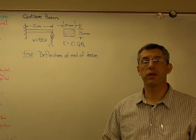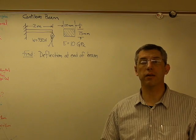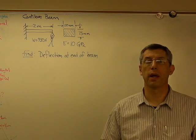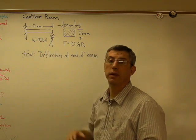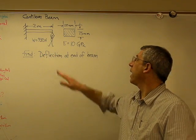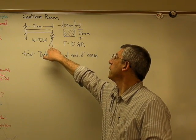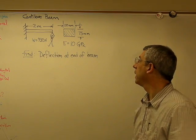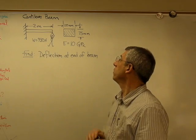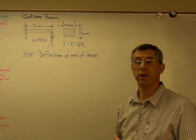I've had several requests to do an example on cantilevered beams, so here you go. I've set up a problem where we've got a cantilevered beam two meters long, and we have a weight hanging from the end of it, say a person, a middle-aged college professor, and the weight is 930 newtons because the professor eats at McDonald's too often.